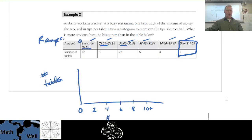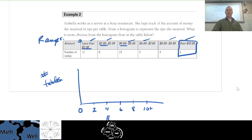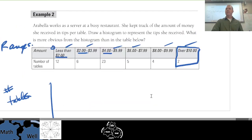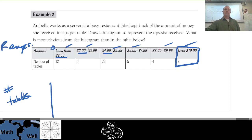Okay, so example two. This is section 2.3 histograms, part two, so we'll pick it up here. On your sheets you should have an example two that starts off with Arabella. Arabella works as a server at a busy restaurant. She keeps track of the amount of money she receives in tips per table. Draw a histogram to represent the tips she received.